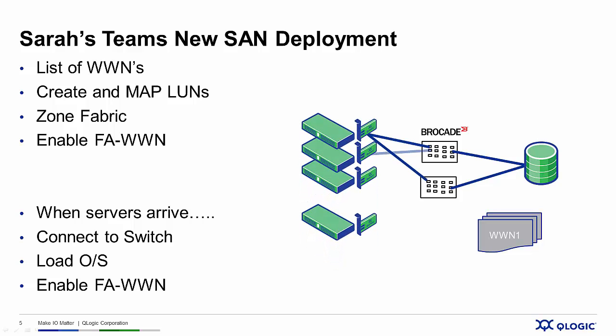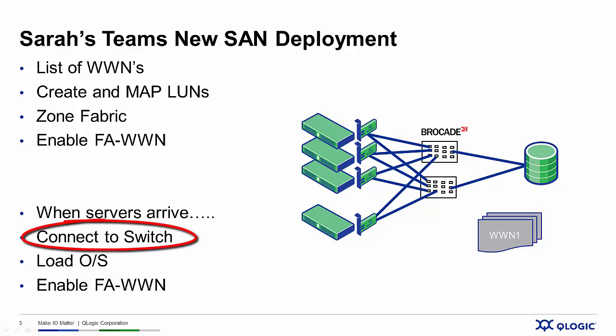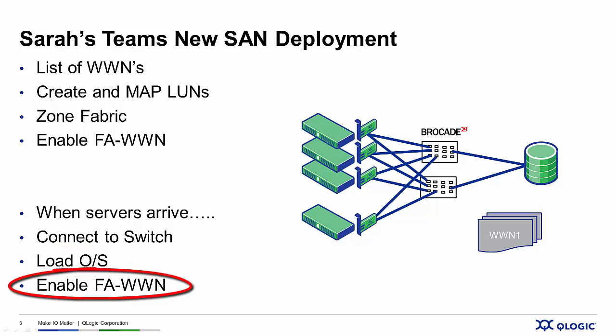Then at whatever time the servers arrive, all the server administrator has to do is install the servers, connect them to the switches at the appropriate ports, load their operating systems, and then launch a management application called QCC — which we'll talk about in a minute — and enable Fabric Assigned Worldwide Name on the adapter end. Once they do that, they're ready to go.